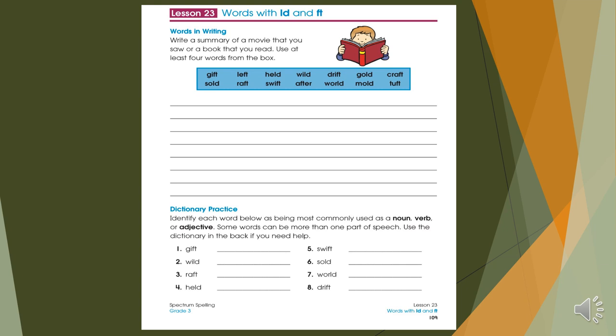The other exercises are on page 109. The first one that you are very familiar to it is asking you to write a summary of a movie that you saw or a book that you read. Use at least four words from the box. Write a summary. Something like a paragraph. And use at least four of the words from the box. It should be about a movie that you saw previously.